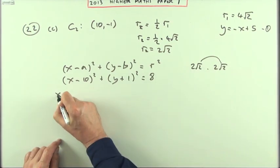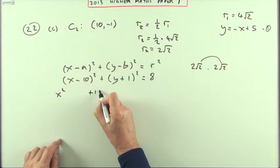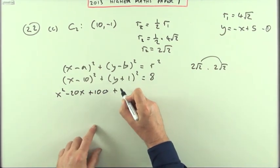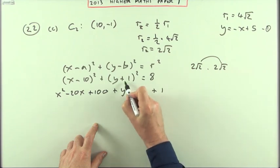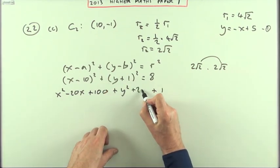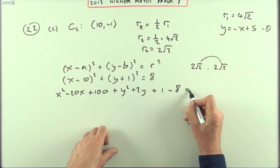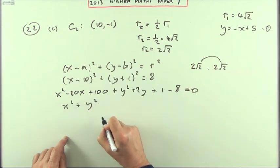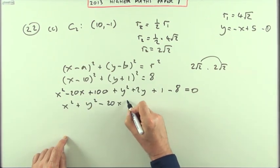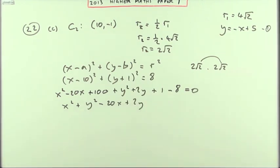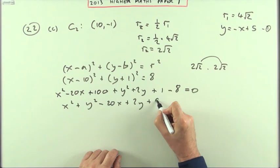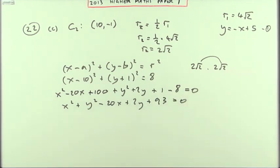Now let's just multiply those brackets, square the first, square the last, in the middle, twice the product, same with the y's, square the first, square the last, in the middle, twice the product, we'll also bring that 8 over at the same time, then put them into the right order, squared terms first, then the x, then the y, and finally add up the numbers, and for that you've got 101 minus 8, which is 93, as it said, plus 93 equals 0.